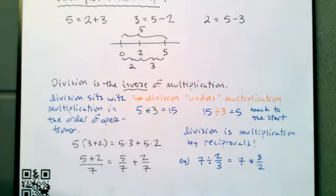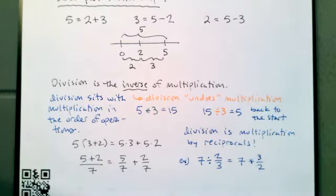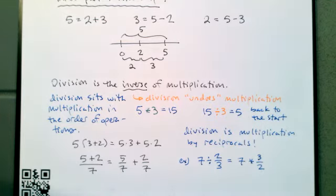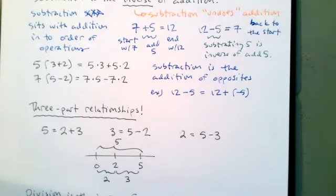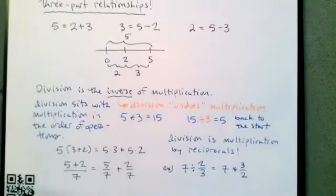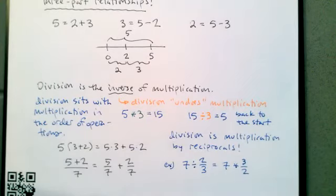Reciprocals is the word for a multiplicative inverse. Multiplicative inverses have a product of 1 — that's what makes them inverses, because 1 is the multiplicative identity; multiplication by 1 is the multiplication that doesn't do anything. Similarly, opposites are additive inverses — 5 and negative 5. Because when we add opposites, we end up with 0, which is the additive identity, because adding 0 is the addition that doesn't do anything.